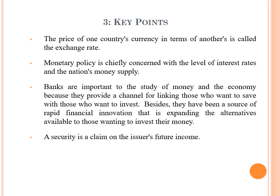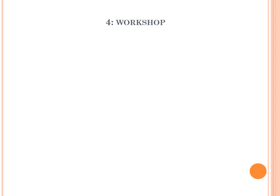A security is a claim on the issuer's future income. As mentioned in the first lecture, the financial system consists of three main components: financial markets, financial institutions, and financial claims. A security is a type of financial claim.